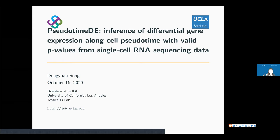He joined UCLA last year after finishing his master's degree in the computational biology and biostatistics program at Harvard School of Public Health. Before that, he was an undergraduate student at Fudan University in China. During his undergrad study, he focused on evolutionary biology, and then since his master's, he switched to statistical genomics. Dongyuan is a very talented and productive student. Today he's going to talk about his first project, almost completed, about the detection of differentially expressed genes along cell pseudotimes from single-cell RNA-seq data.